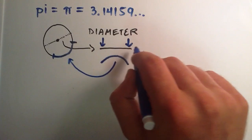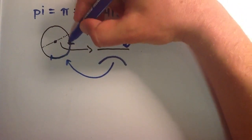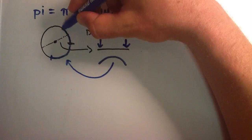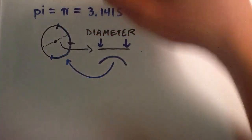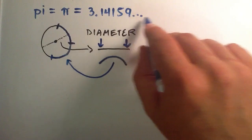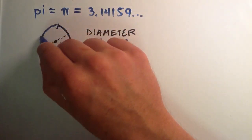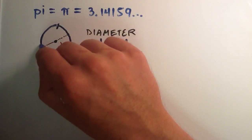If we were to keep taking these diameters, bending them, and placing them around, what we would find out is it takes exactly 3.14159 and a whole bunch of extra numbers that follow, times to get around this circle to cover the entire circumference.